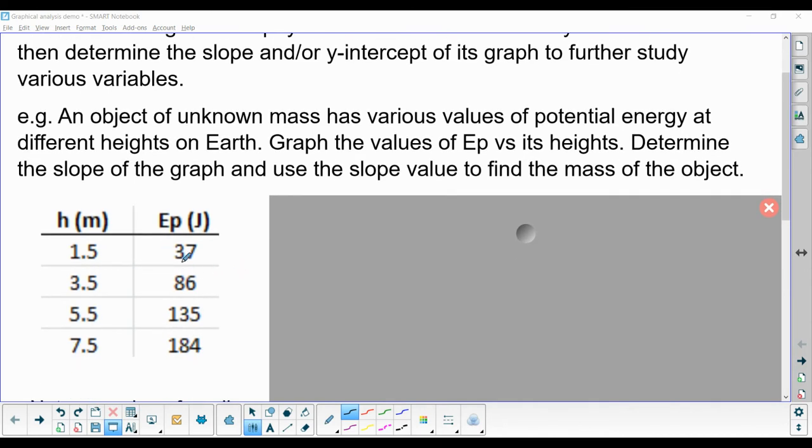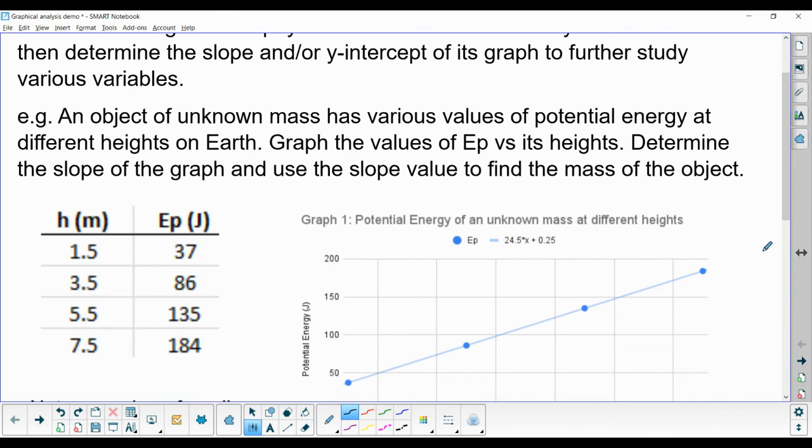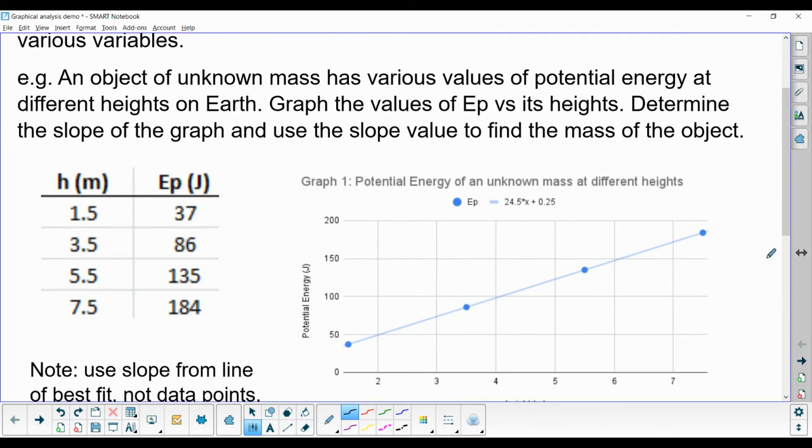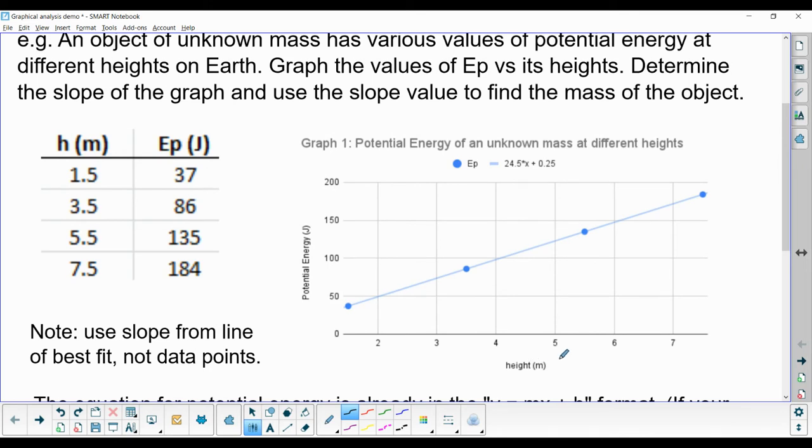So we have four different data points, and I used Google Sheets to make a graph of the potential energy compared to the height of the object. I asked Google Sheets to show me the equation of the graph, and it tells me the equation is potential energy equals 24.5x plus 0.25.